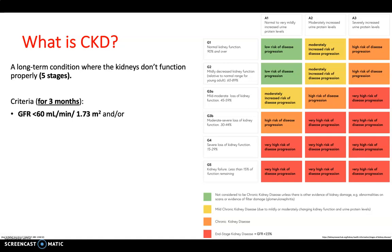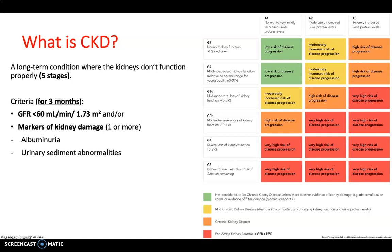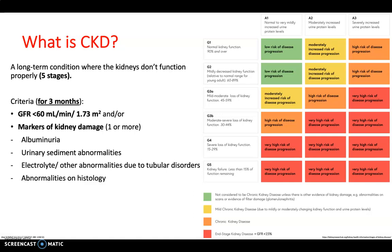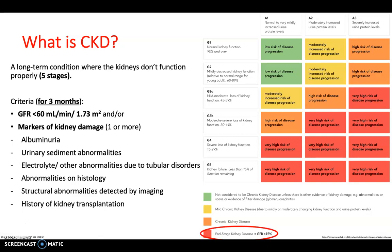In terms of criteria, this needs to be present for at least three months, and this would include a GFR of less than 60 and/or any markers of kidney damage — things like albumin, urea, urinary sediment abnormalities, tubular disorders causing electrolyte or other abnormalities, abnormalities seen on histology, structural abnormalities, or any history of kidney transplantation. It's important to remember that when you reach a GFR of less than 15%, this is known as end-stage kidney disease.